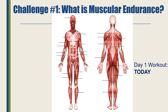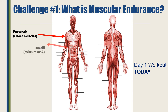For your muscular endurance workout, you're going to be splitting the workout into three different days based on each muscle group. Please do not do all the workouts in one day — we're going to split them up so you can rest the muscles you worked the day before. Day one — that's today — will focus on your pectorals, which is your chest muscles, and your biceps, which is your arm muscles.